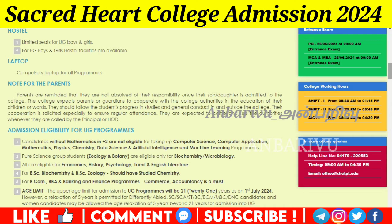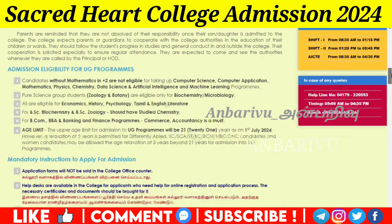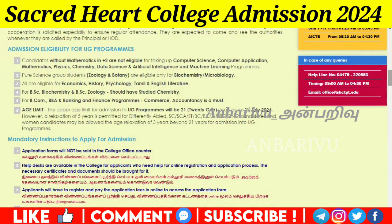What is the eligibility for the UG program? Without mathematics: computer science, computer application, maths, physics, chemistry, data science, artificial intelligence, and machine learning are available. Pure science students can learn biochemistry and microbiology, zoology, and botany.